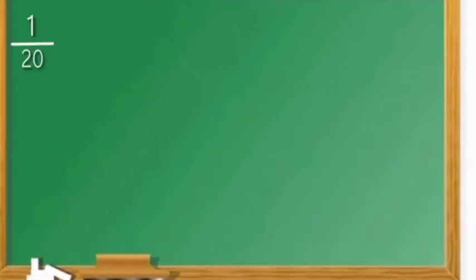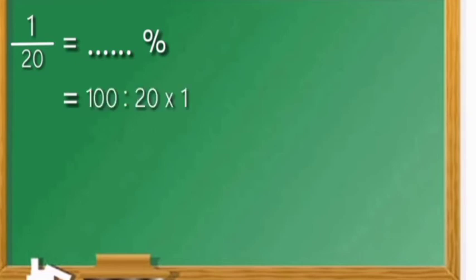Untuk contoh selanjutnya: satu per dua puluh sama dengan berapa persen? Maka, seratus dibagi dua puluh kali satu. Seratus dibagi dua puluh sama dengan lima, kemudian kalikan satu, sama dengan lima persen.